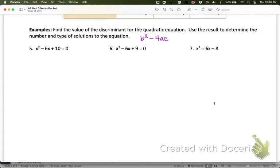If we look at number 5, b is -6, so (-6)² minus 4 times a, which is 1, times c, which is 10. It says find the value of the discriminant, so we want to know what it equals, and then use the result to determine the number and type of solutions.